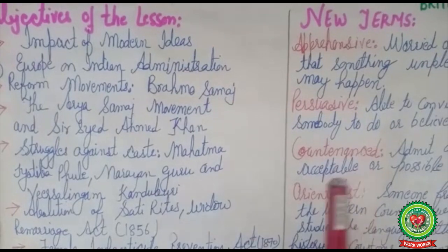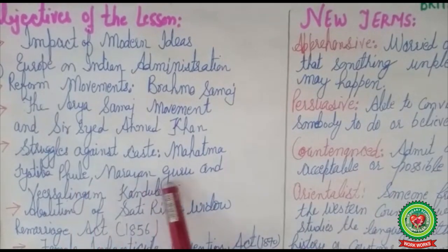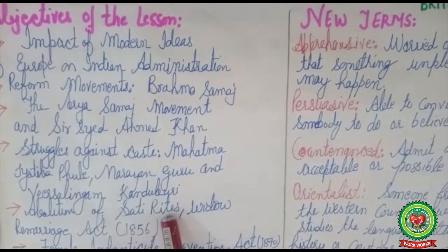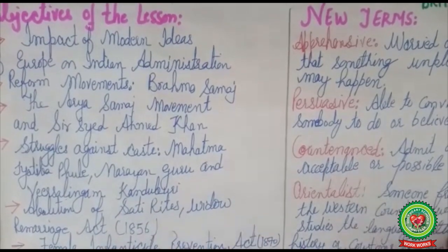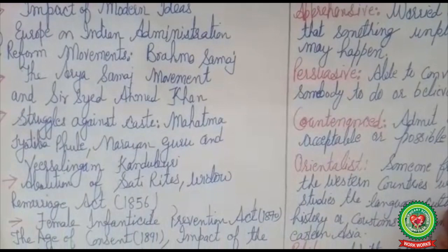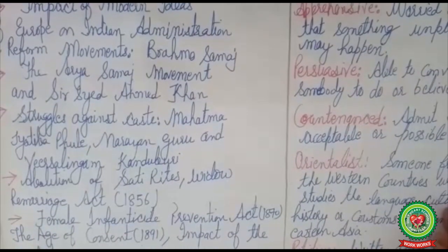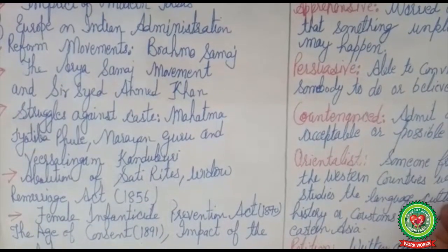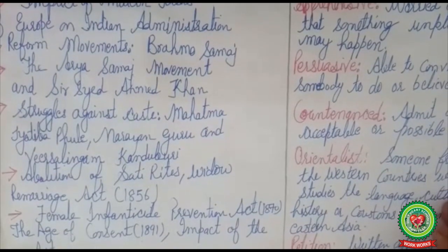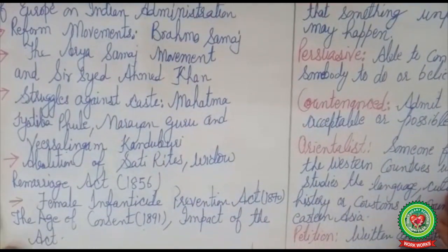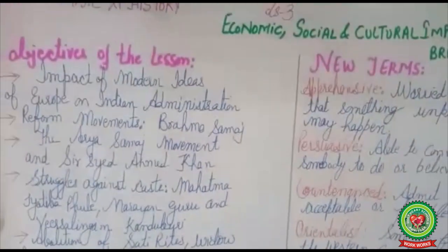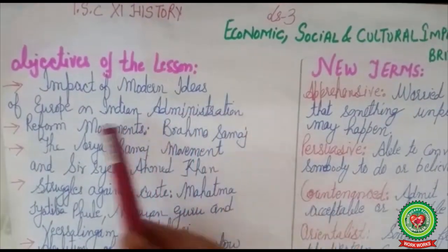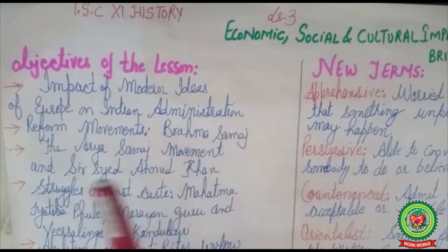Further objectives include the contribution of Mahatma Jyotiba Phule, Narayan Guru, and Veerasalingam Kandukuri, the abolition of sati, the Widow Remarriage Act of 1856, the Female Infanticide Prevention Act of 1870, the Age of Consent Bill 1891, and its impact. We had already discussed the impact of modern ideas of Europe on Indian administration.